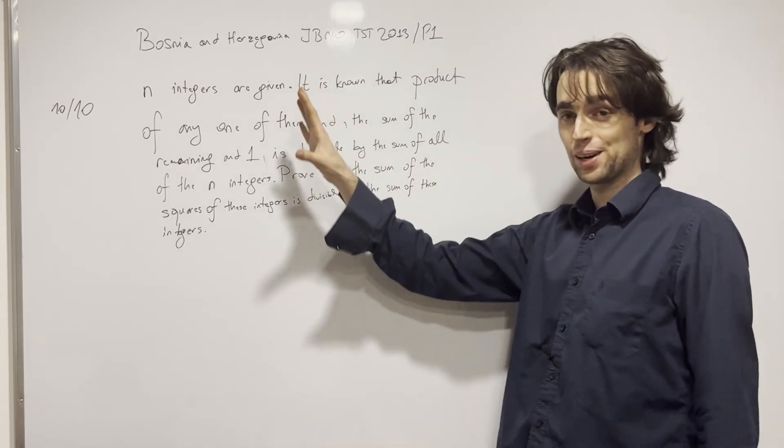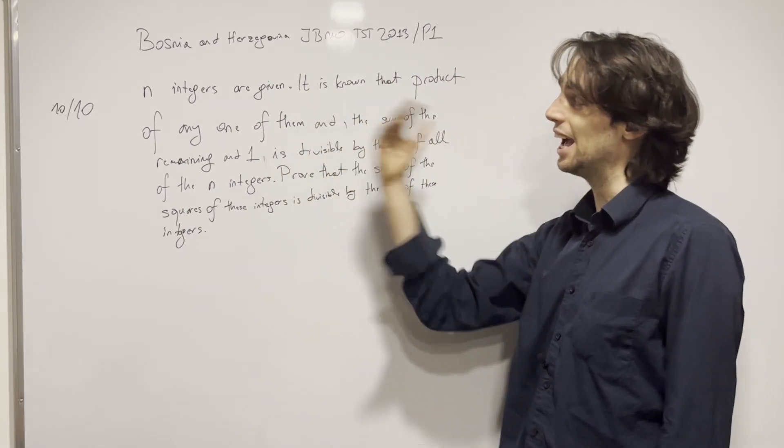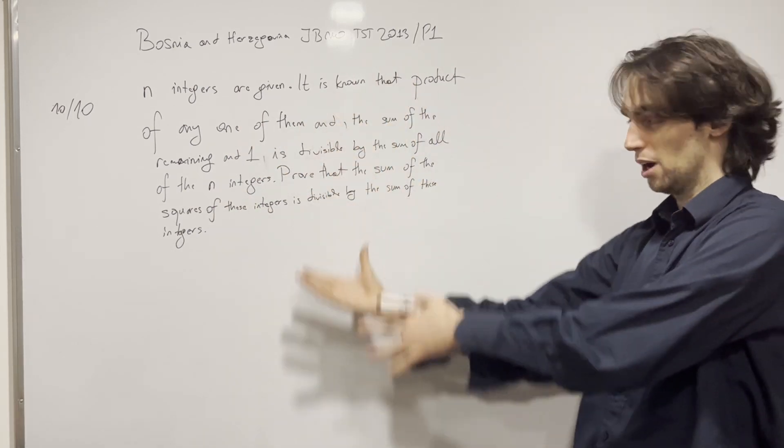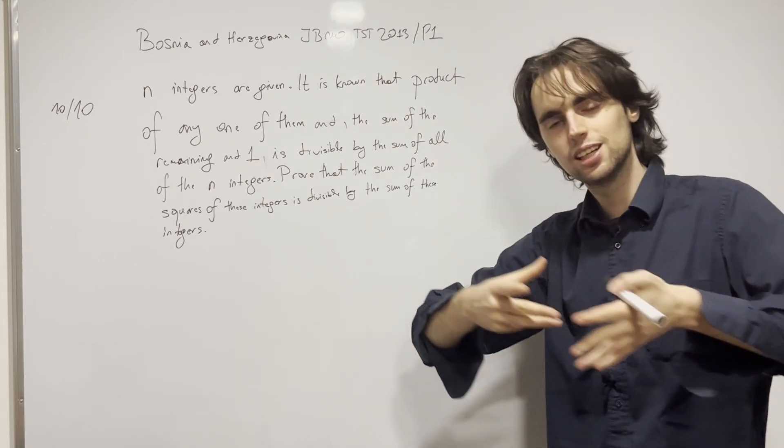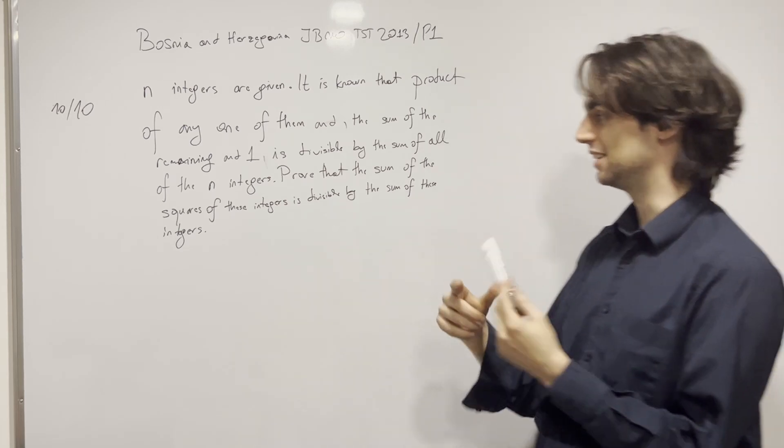So when I saw this translation, I was like, what is happening? Oh my God. So first n integers are given. Okay. This is a word problem. Math is sometimes, you know, you want to transform words into actual variables, numbers that you can work with. So we have n integers. Okay. Call them x1, x2, and xn.